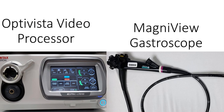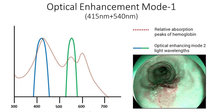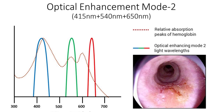The Pentax Optivista platform has two optical filters available: Optical Enhancement Mode 1 and Optical Enhancement Mode 2. With the use of the Magnifü gastroscope, formal magnification up to 135 times is possible. Optical Enhancement Mode 1 is comprised of the wavelengths 415 and 540, comparable to NBI and BLI with the Olympus and Fujifilm platforms respectively. Optical Enhancement Mode 2 is comprised of the wavelengths 415, 540 and 650.